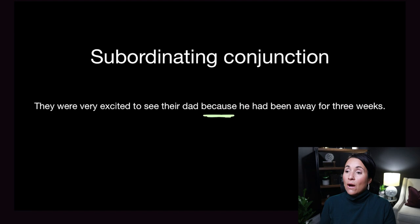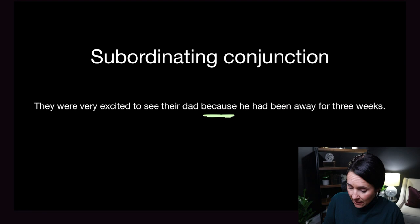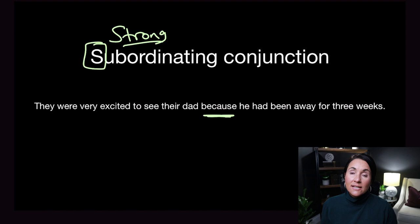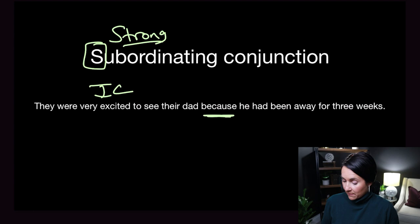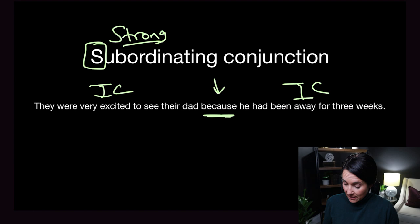Another way to fix this is by putting a subordinating conjunction between the two independent clauses. The S in subordinating means strong, so subordinating conjunctions are strong conjunctions. 'Because' is considered a strong subordinating conjunction. For example: 'They were very excited to see their dad because he had been away for three weeks.' The 'because' is strong enough to separate the two independent clauses and you do not need a comma. On the exam, if you see a comma before 'because,' that's a red flag — remove the comma.